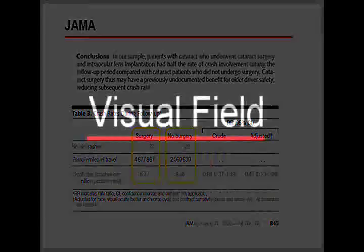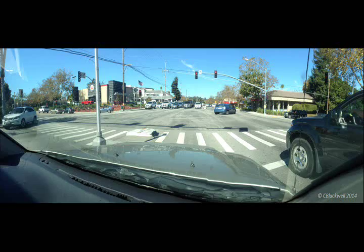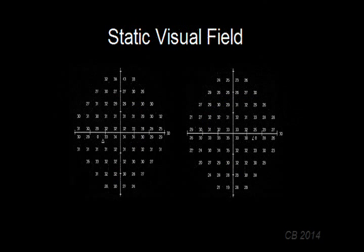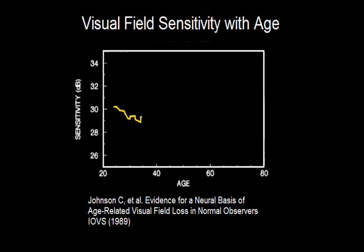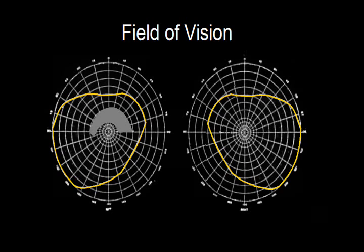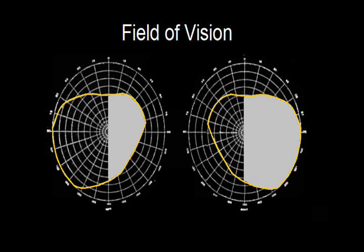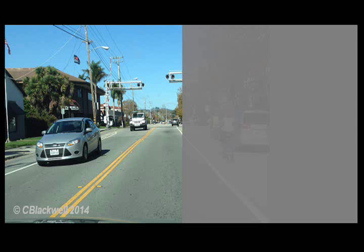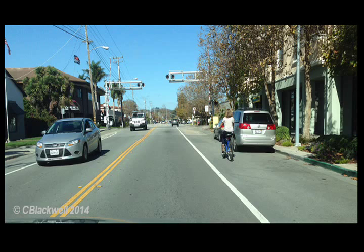Field of vision measures how far off to the sides you can see. We have tools to measure both how far peripheral vision extends and the sensitivity of vision at grid points across the field. We can measure a decrease in sensitivity over all points in the visual field with age, and we can measure missing areas in vision caused by things like glaucoma and stroke. Imagine the challenge of driving with half of your vision missing, though some drivers in this situation are able to adapt and drive safely by frequently scanning from side to side.